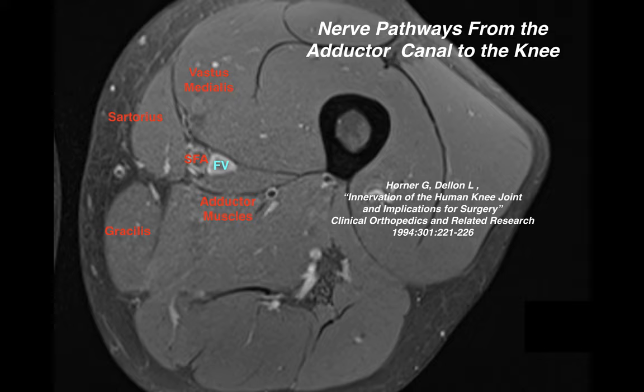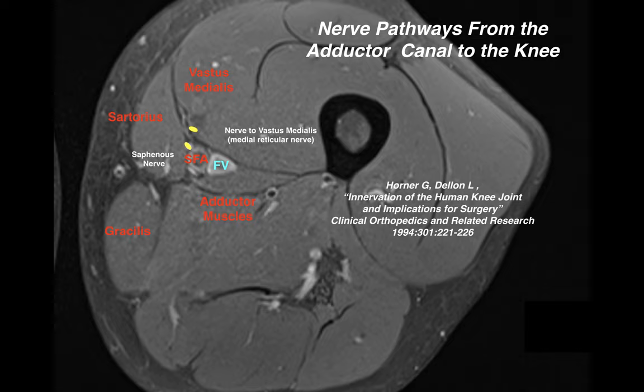In this image, we focus on three main nerves of the adductor canal and their pathways to the knee joint. Note that the nerve to the vastus medialis leaves the adductor canal and passes to the deep surface of the vastus medialis on its way to the knee. Likewise, the saphenous nerve as well as the medial femoral cutaneous nerve leave the adductor canal and pass to the deep surface of the sartorius muscle.